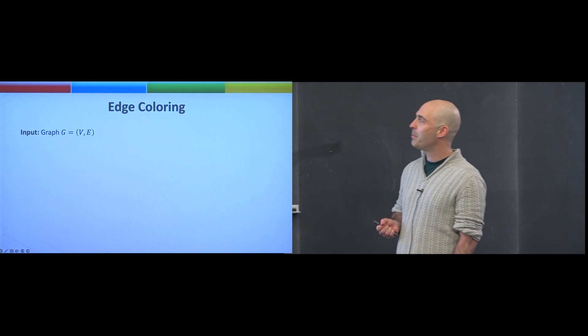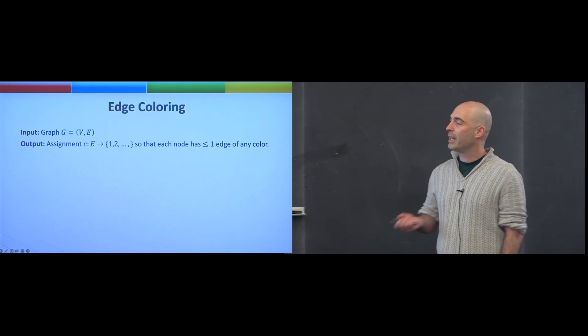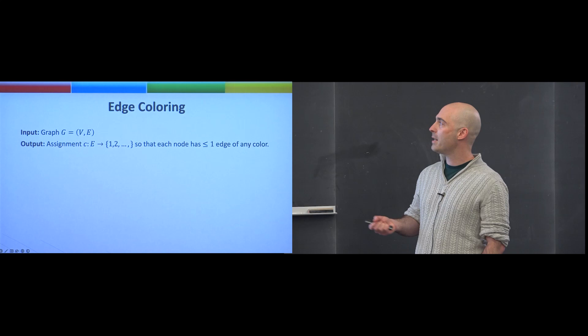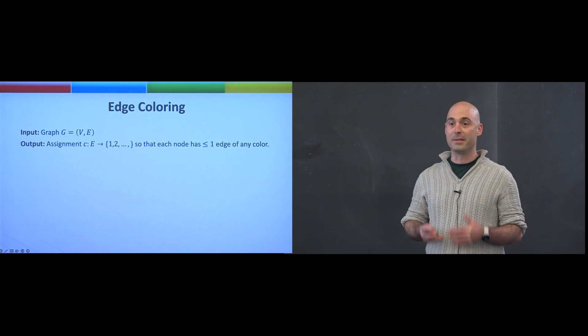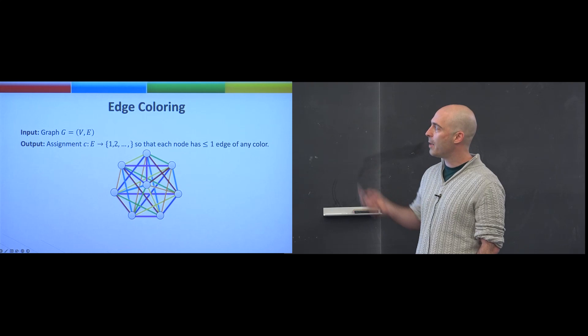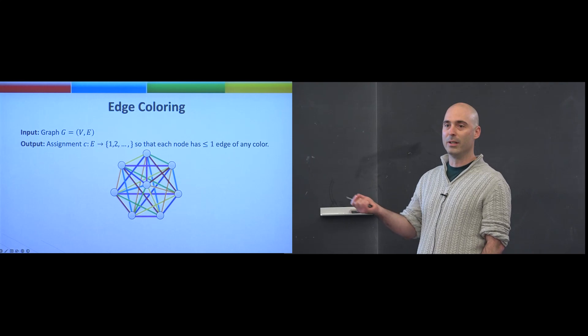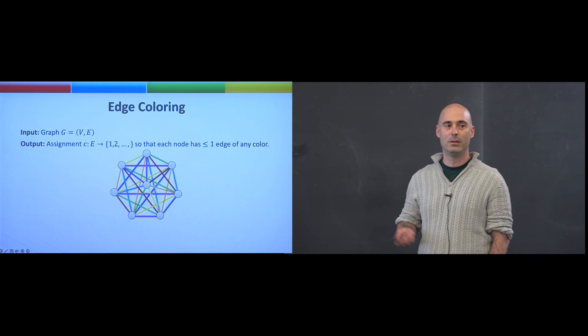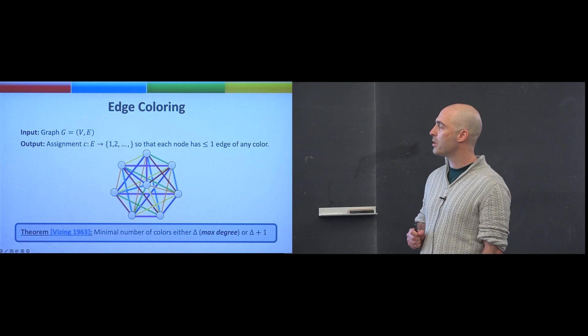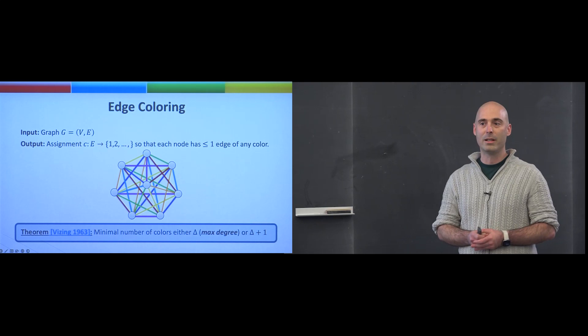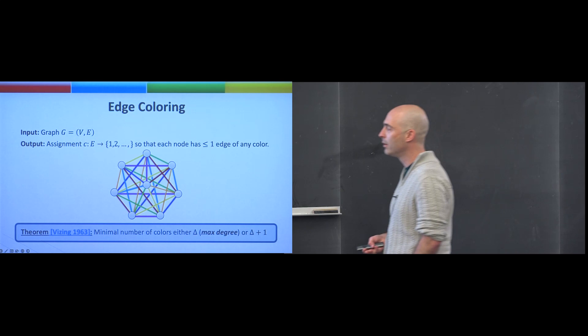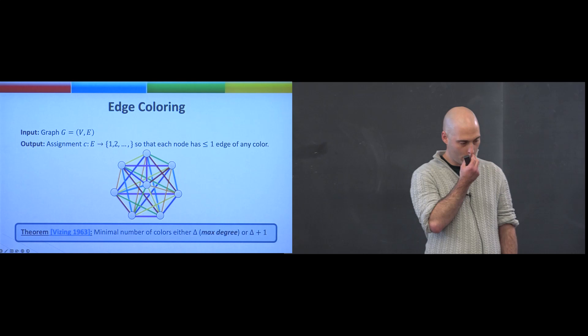As a quick reminder, edge coloring is the problem defined as follows. You get an input graph and you'd like to assign each edge a color associated with the integers so that each node has at most one edge of any color. If you look at all edges with the same color, this is exactly a matching. For example, this is an eight-edge coloring of K8. It's trivial to decompose the graph into many matchings by assigning every edge a unique color. The natural question is: what's the minimal number of colors you need? This is a classic result of Vizing's, now six decades old, that the minimal number of colors is either the maximum degree delta or delta plus one. Max degree is a trivial lower bound, so the fact that this is more or less the right answer is pleasing.